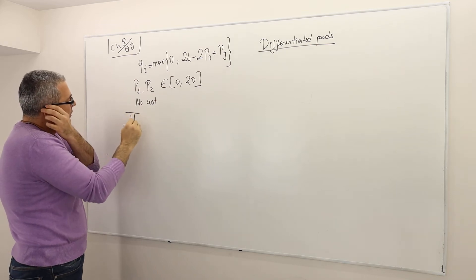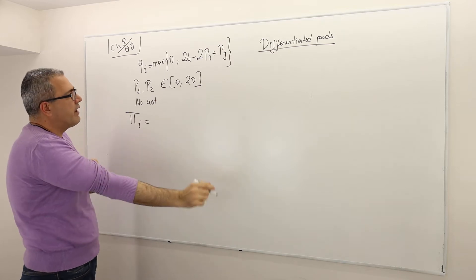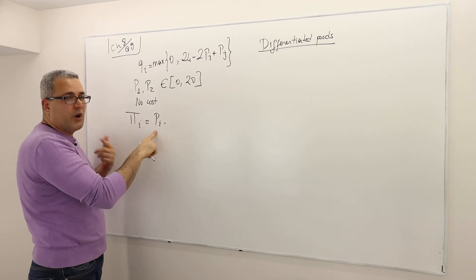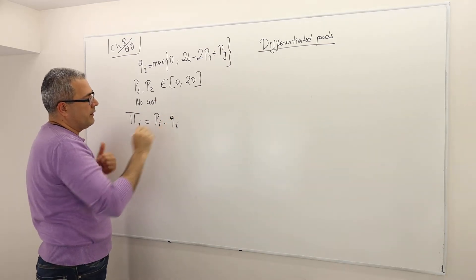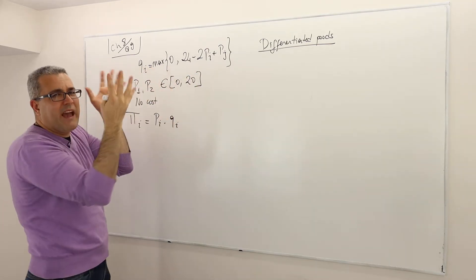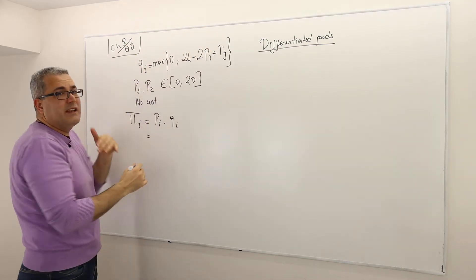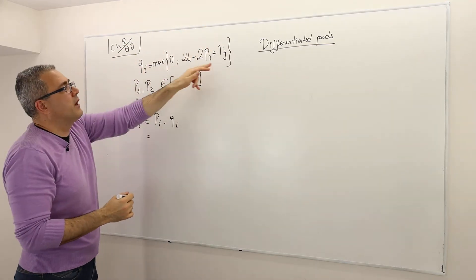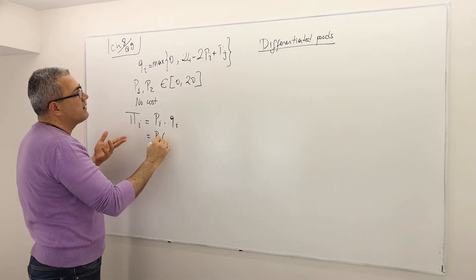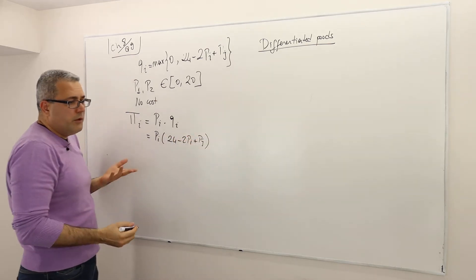So the profit is simple. Profit of firm i is actually price times quantity, the revenue. So what is the price? Price of firm i times the quantity of firm i. What is the quantity? Well, you don't really have to take this max form. You just basically take this part and then later make sure that this part will never be negative. So that means the profit is actually equal to pi times 24 minus 2pi plus pj.